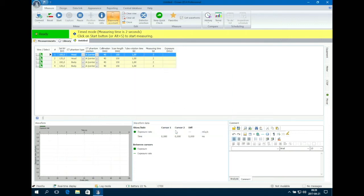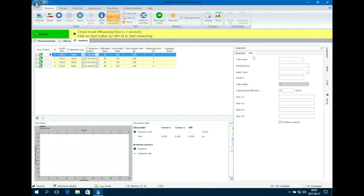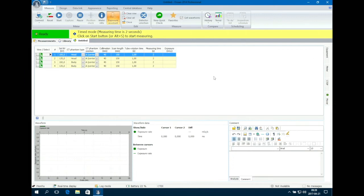These steps are done to help Ocean to extract all the measured parameters out of just one exposure. If you know the total inherent filtration you can add that too. Otherwise you can use Ocean's default value of 7mm of aluminium. You change this value under the tab tube. Close the equipment tab.